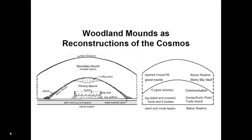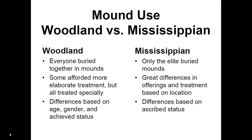By contrast, woodland mounds reconstructed the cosmos, with a dark mucky layer at the bottom representing the underworld, a central primary mound representing the earth, and a curving gravelly layer representing the vault of the sky. During the woodland period, everyone was buried together in the mounds. During the Mississippian period, only the ruling elite were buried in mounds. In the woodland period, some people may have had more elaborate offerings, but everyone was treated specially and buried together. In the Mississippian period, there are great differences in offerings and treatment based on proximity to a mound.